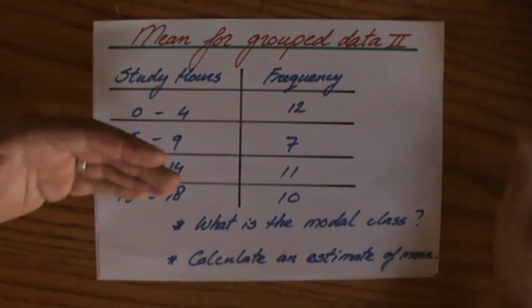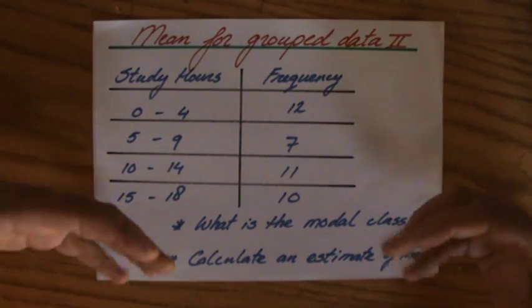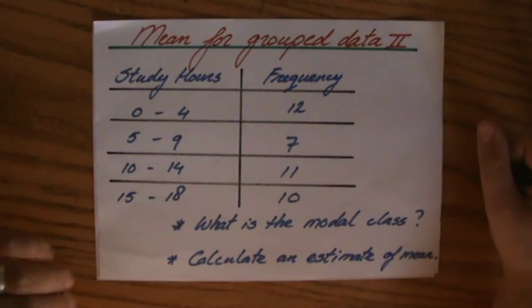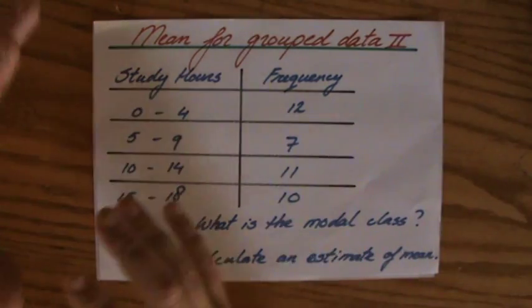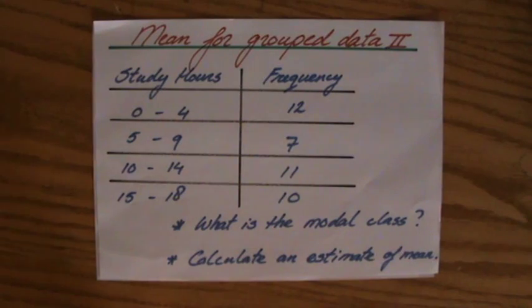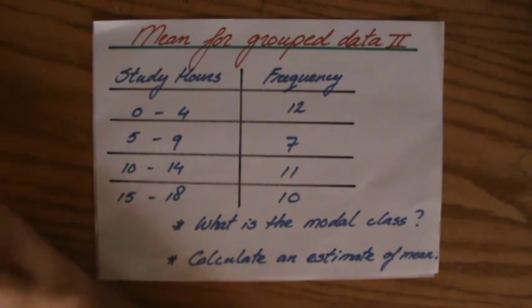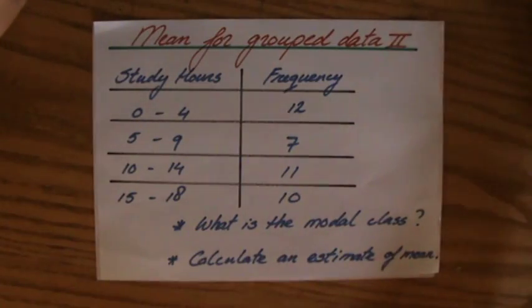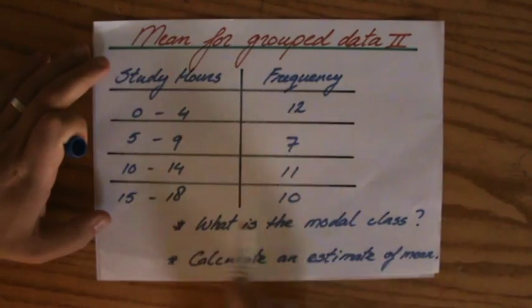And then the questions you will get is like, what is the modal class? And then calculate an estimate of the mean, which is a paradox. That's what I explained in a previous video, so I'm going to go a little bit quicker now. The modal class, which is nothing more than the mode, which class is most popular,